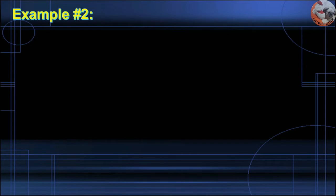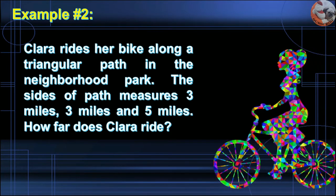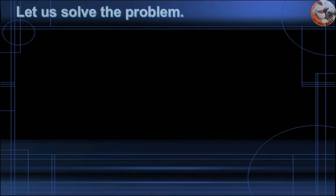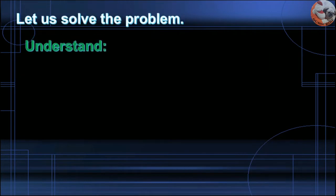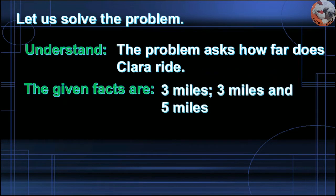Example number two: Clara rides her bike along a triangular path in the neighborhood park. The sides of the path measure 3 miles, 3 miles, and 5 miles. How far does Clara ride? Understand: the problem asks how far Clara rides, and the given facts are 3 miles, 3 miles, and 5 miles.